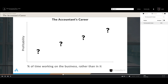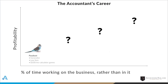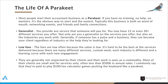We're going to talk about what it means to go through each of these stages. The very first stage that most people start out at is called a parakeet. A parakeet is typically a generalist, somebody that has low fees — I say they often charge $100 a month to play calculator games. Most people that start their businesses in accounting start out as a parakeet. If you don't have any training, help, or mentors, it's kind of the obvious and easiest way to start.